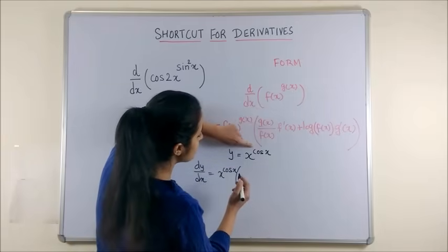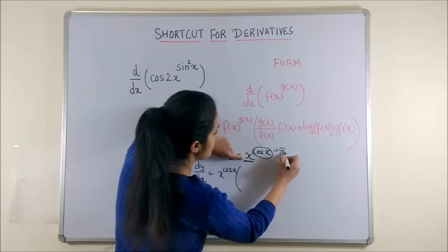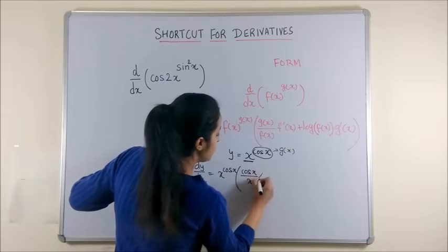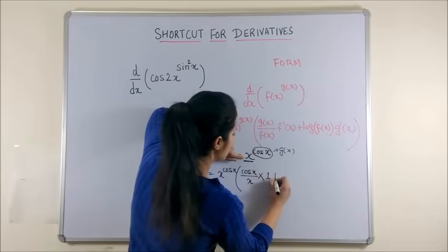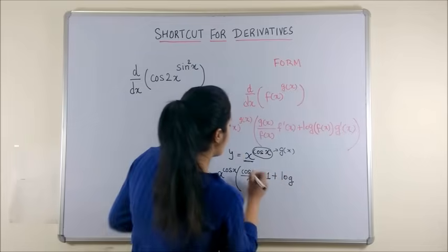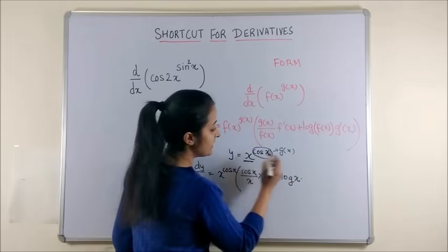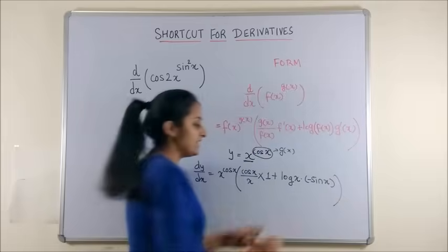Now, g(x) upon f(x). So, if this is my f(x) and this is my g(x). So, this becomes cos x by x into derivative of what you have written in the denominator which is 1 plus log of this function which is x into derivative of cos x which would be minus sin x.